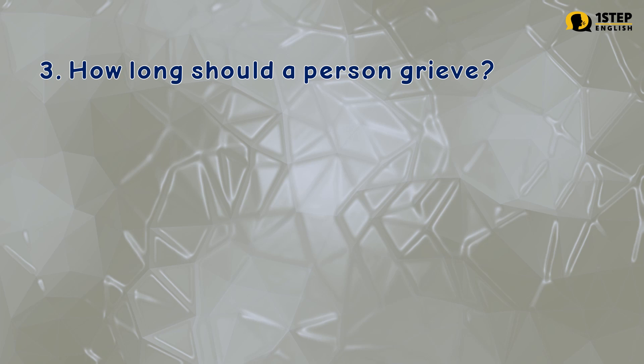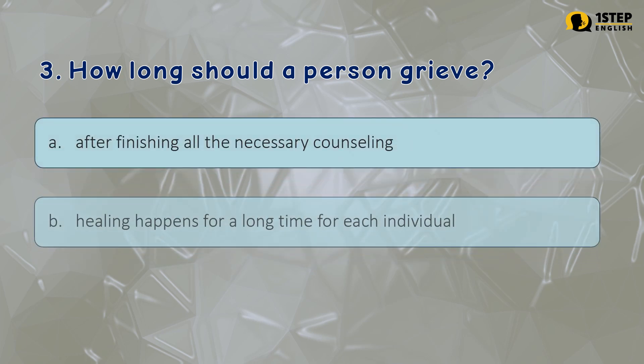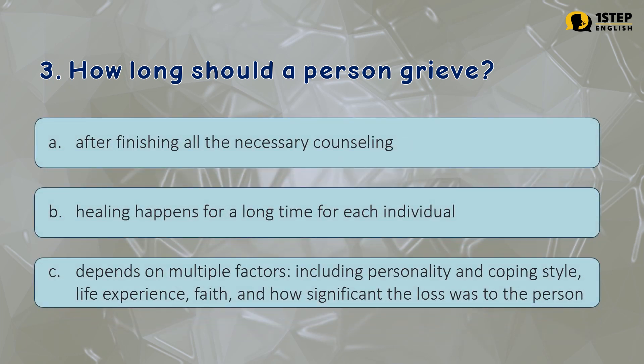Number 3: how long should a person grieve? Letter A: after finishing all the necessary counseling. Letter B: healing happens for a long time for each individual. Letter C: depends on multiple factors, including personality and coping style, life experience, faith, and how significant the loss was to the person. The correct answer is Letter C.